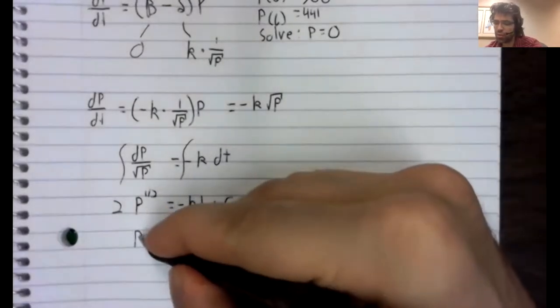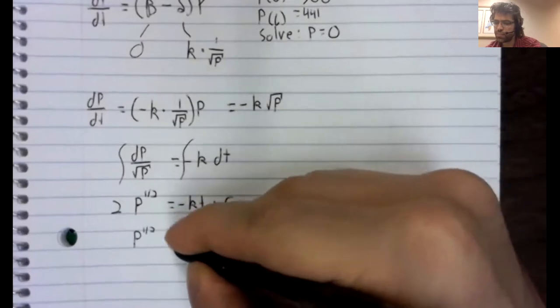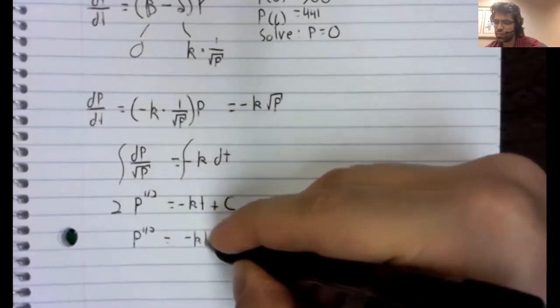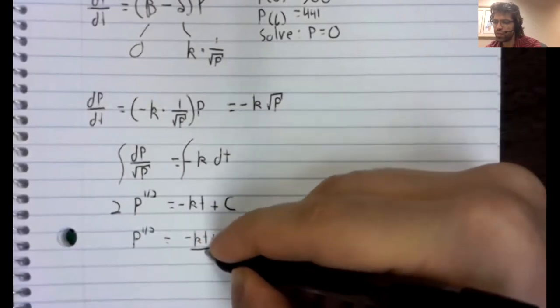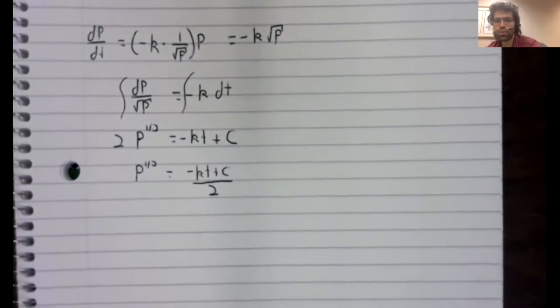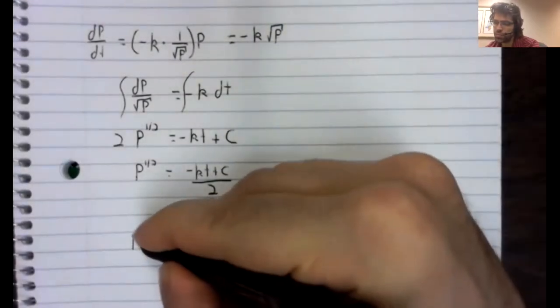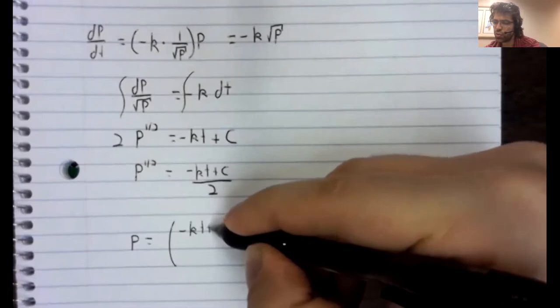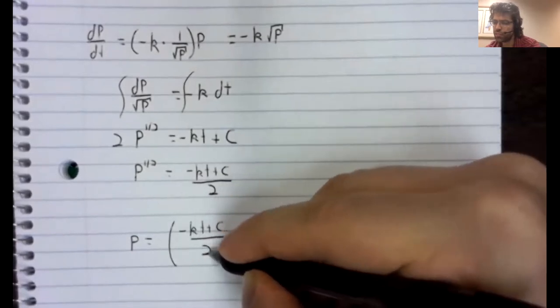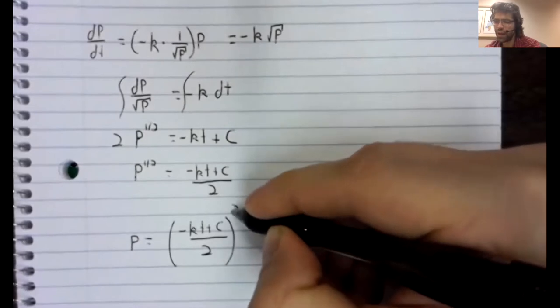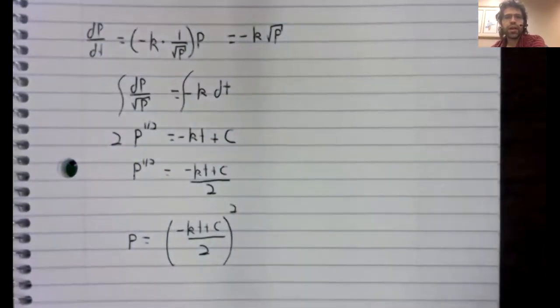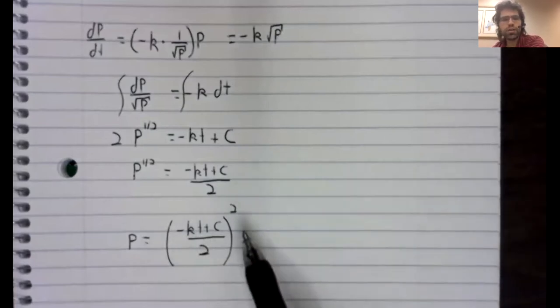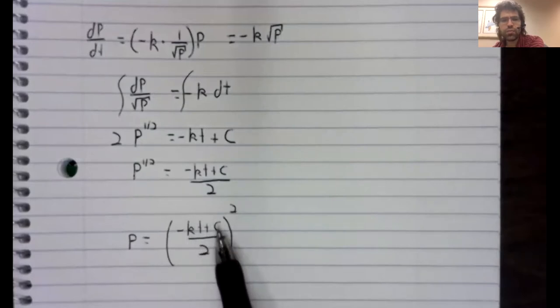And now solving this is hopefully relatively straightforward. The population is this rational expression squared. And we're trying to find when extinction occurs. So we're trying to set population equal to zero. And for that we need to know k. We need to know c.